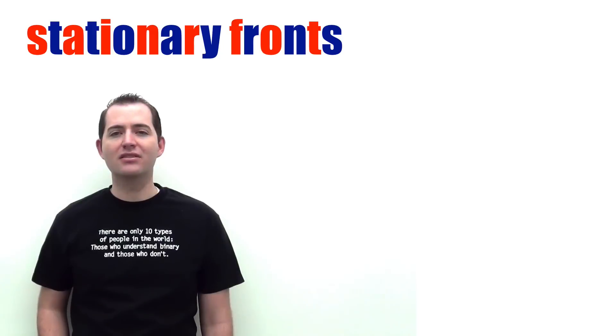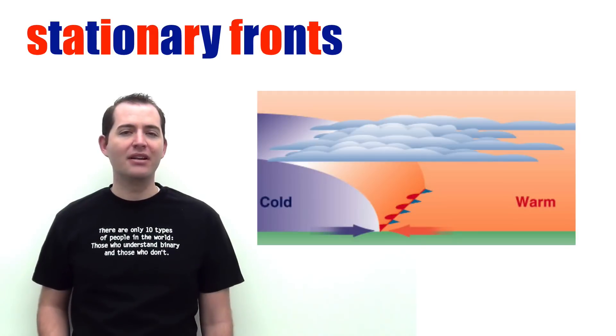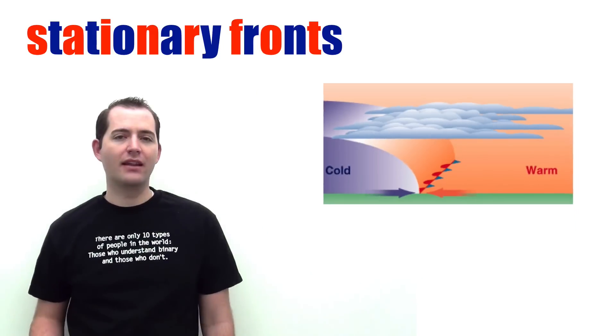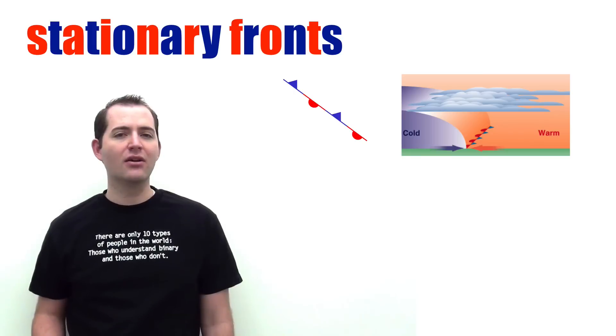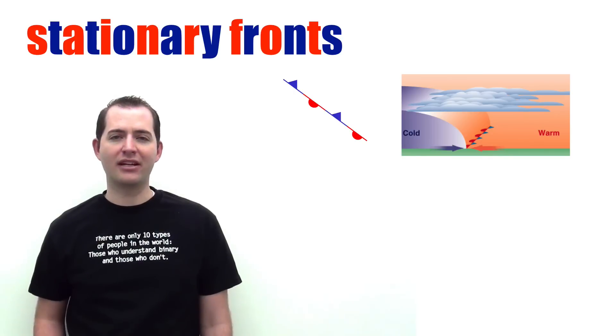A stationary front happens when two air masses meet but neither is strong enough to replace or force out the other. This type of front is represented by a mix of red semi-circles and blue triangles which are pointing in opposite directions.